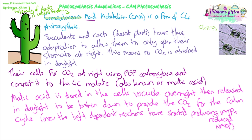Why do they have this adaptation? Closing stomata during the day prevents water loss, because in the daytime in the desert it's much hotter with high light intensity, so a lot more transpiration takes place and more water is lost. By opening stomata at night when it's cooler, much less transpiration takes place, so less water is lost. This has literally allowed them to survive in places where opening stomata during the day would be life-threatening — the plants would lose so much water they would die.